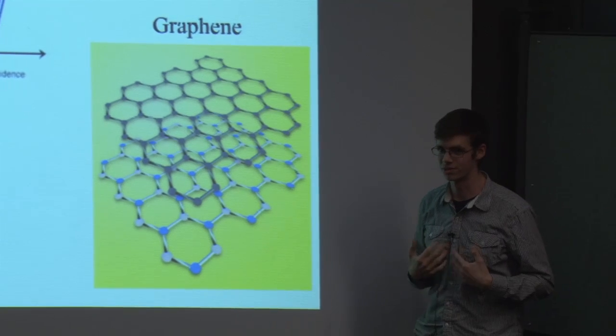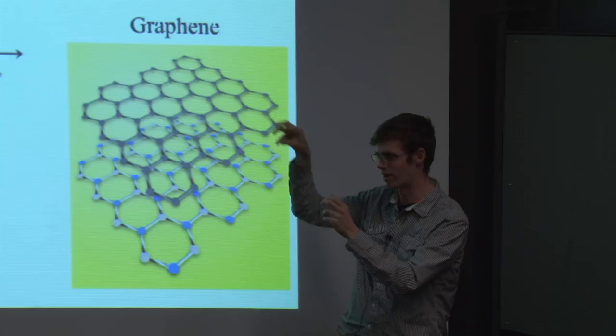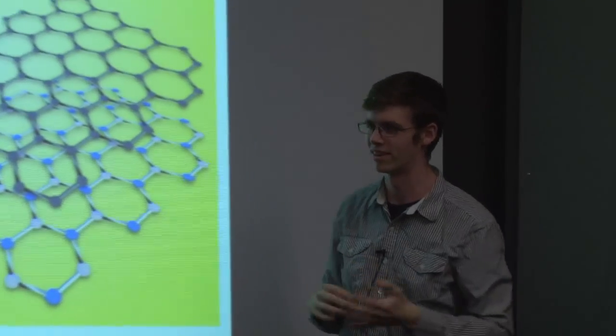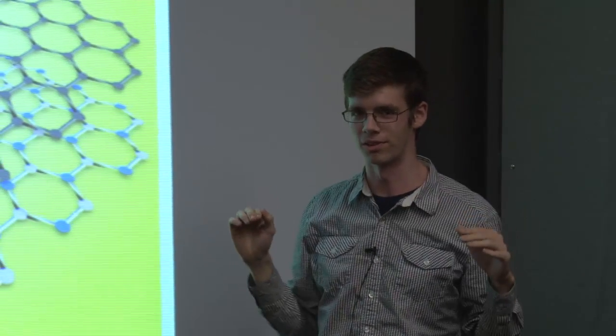So part of my group's research is to see how exactly do those fluctuations change when you have molecules attaching to the graphene? What really happens and how do you measure those fluctuations in your electric field?